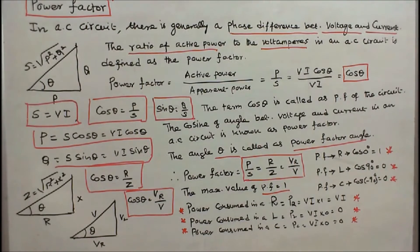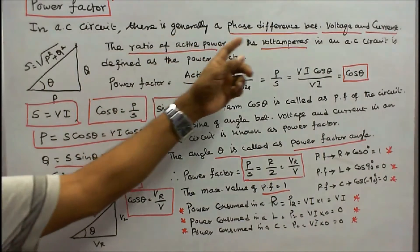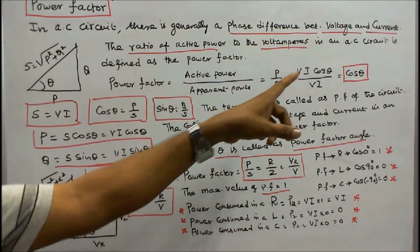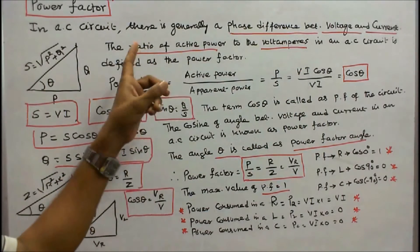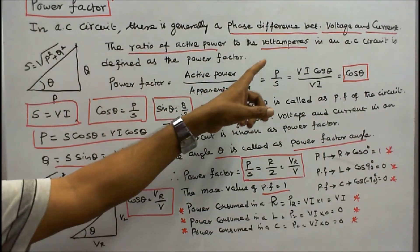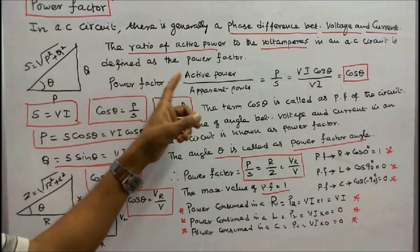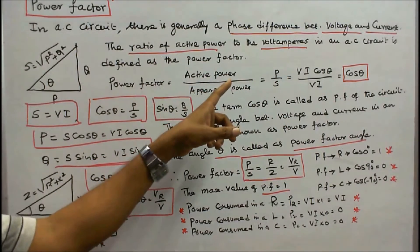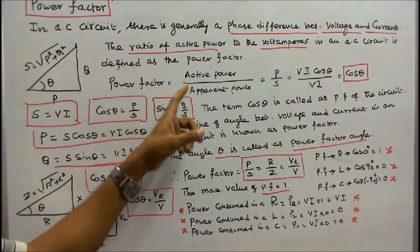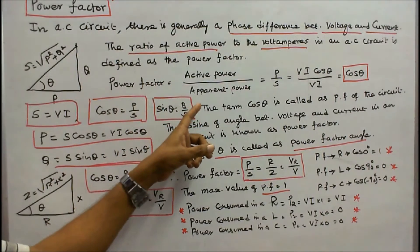The next topic is power factor. In an AC circuit, there is generally a phase difference between voltage and current. The ratio of active power to the volt-amperes in an AC circuit is defined as the power factor. Power factor equals active power divided by apparent power.